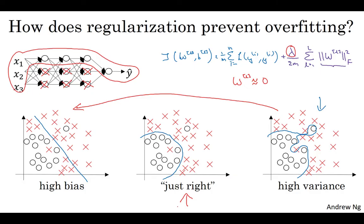But the intuition is that by cranking up lambda to be really big, it'll set W close to zero, which in practice, this isn't actually what happens. We can think of it as zeroing out or at least reducing the impact of a lot of hidden units. So you end up with what might feel like a simpler network that gets closer and closer as if you were just using logistic regression. The intuition of completely zeroing out a bunch of hidden units isn't quite right. It turns out that what actually happens is it'll still use all the hidden units, but each of them will just have a much smaller effect. But you do end up with a simpler network and as if you have a smaller network that is therefore less prone to overfitting.